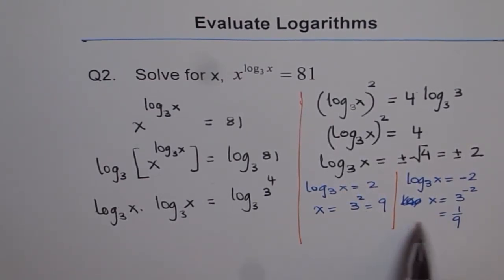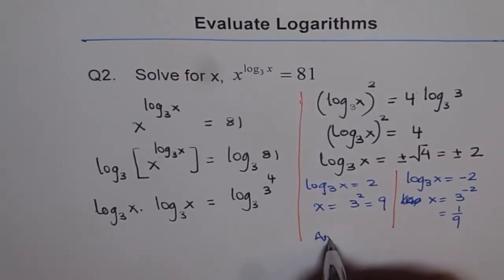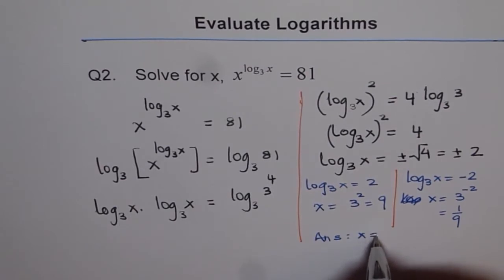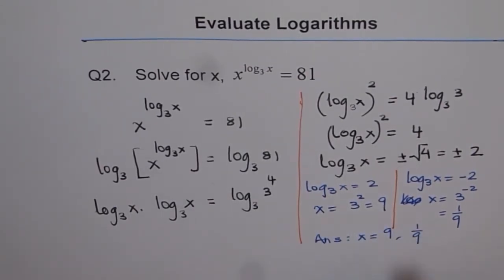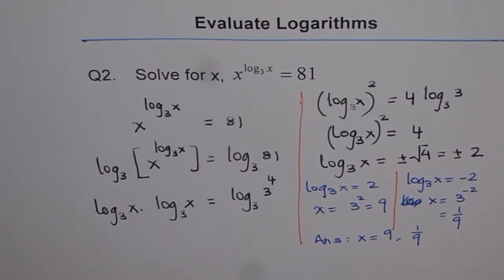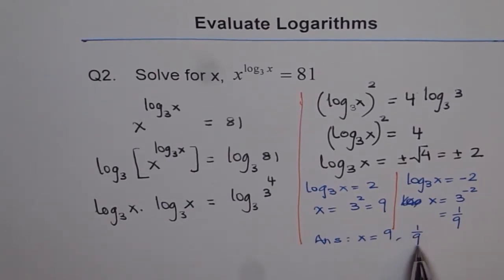So, therefore, we have two possible solutions for this equation. And our answers are x is equals to 9 or 1 over 9. Both fit here in our solution. So, we have two solutions for this given equation. One is 9. The other one is 1 over 9.